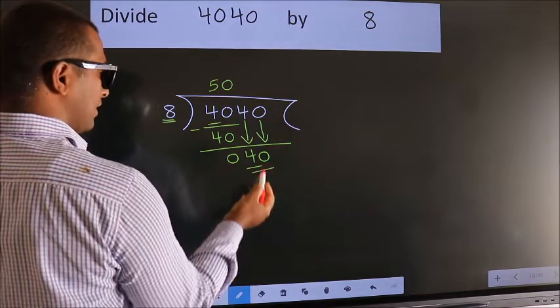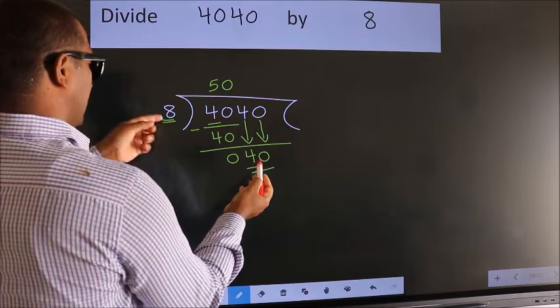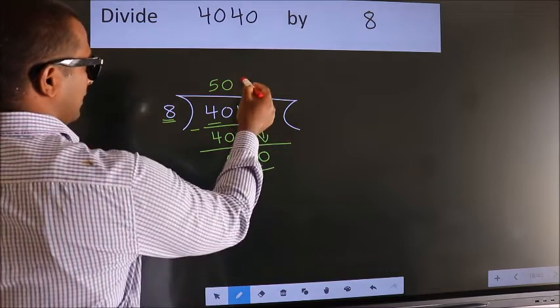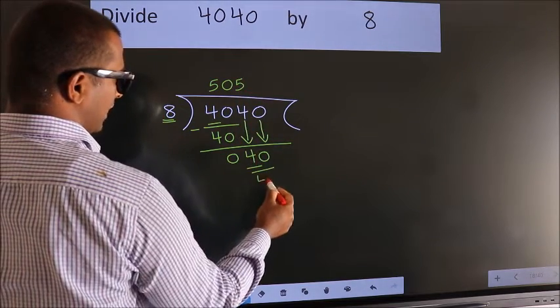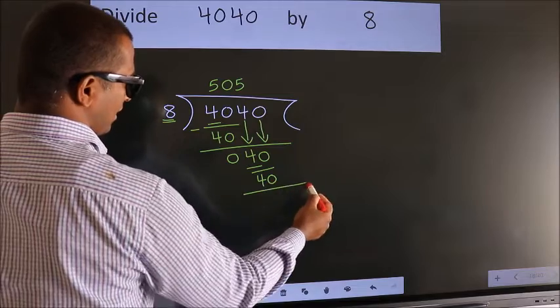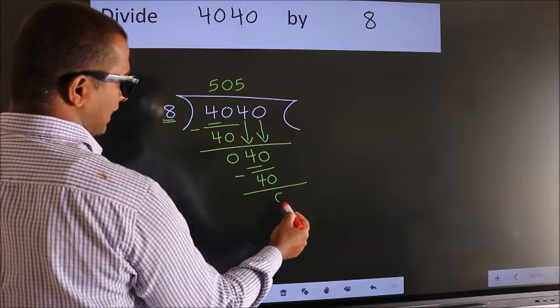So 40. When do we get 40 in the 8 table? 8 times 5 is 40. Now we subtract. We get 0.